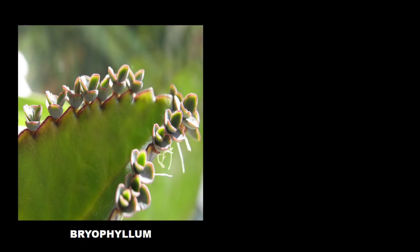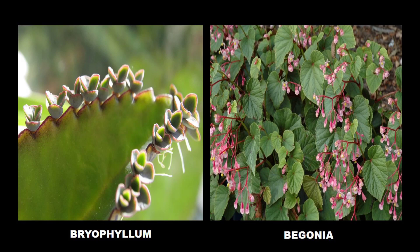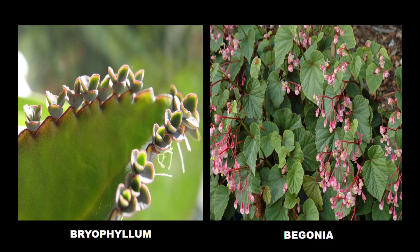The last type is reproduction through leaves. The most common example is bryophyllum, and another example is begonia. If you look at the leaves of bryophyllum on the screen, you will see lots of notches — a cut-like appearance at the edges — and from every notch you will see bud-like outgrowths coming out. These buds, given proper conditions, grow into a new plant.